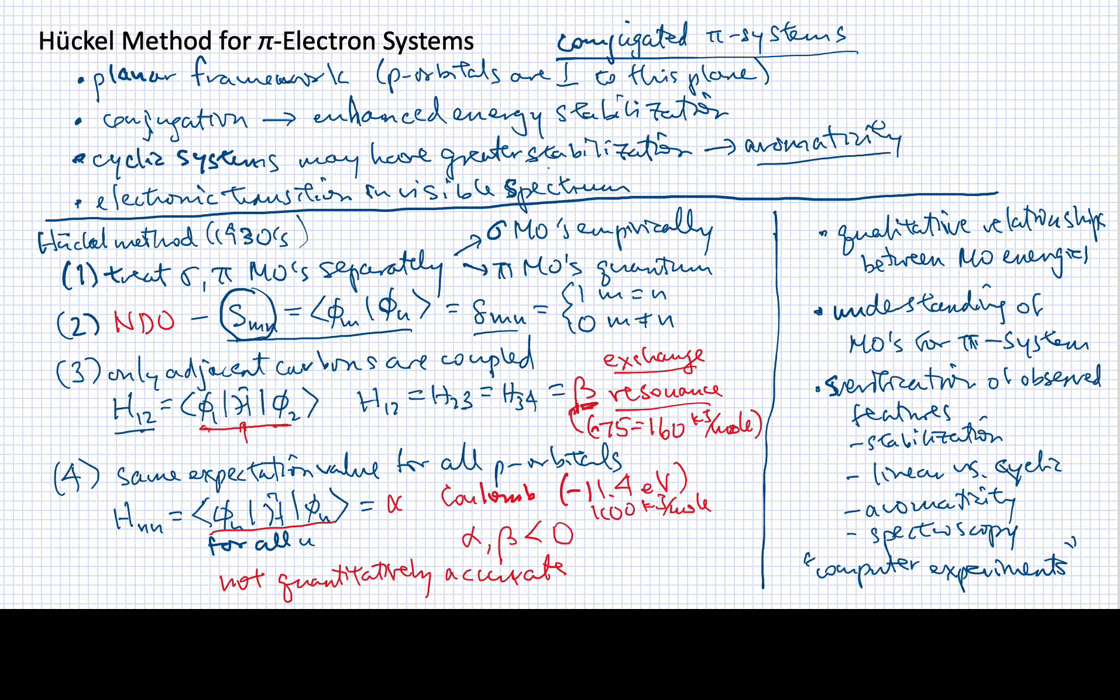Now, when Hückel devised this, of course, there were no computers. So, this was the way that one could calculate certain quantum mechanical features of these systems. But, nowadays, you can calculate these things much more accurately using basic molecular orbital theory. And what one might take from these kinds of methods is greater insight into how they work.